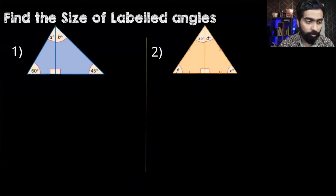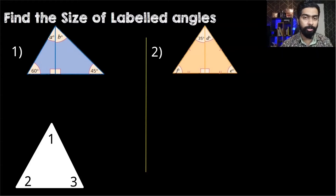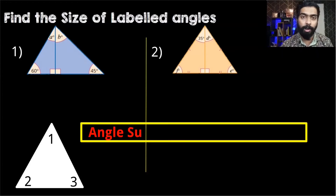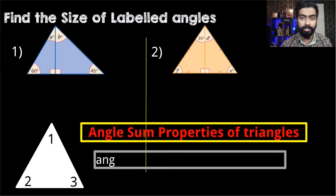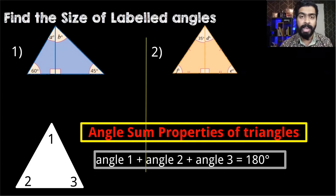In order to find angle A we will be using the angle sum property of triangles. What it states is that all the angles in a triangle add up to 180 degrees.